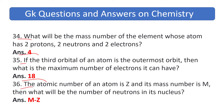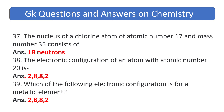If the atomic number of an atom is Z and its mass number is M, then what will be the number of neutrons in its nucleus? The answer is M minus Z. The nucleus of a chlorine atom with atomic number 17 and mass number 35 consists of 18 neutrons. The electronic configuration of an atom with atomic number 20 is 2-8-8-2, which is the configuration for a metallic element.